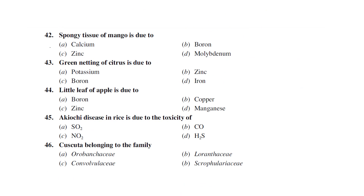Spongy tissue of mango is due to calcium deficiency. Green tinting of citrus is due to iron deficiency. Little leaf of apple is due to zinc deficiency. So the four zinc deficiency diseases are: rice Khaira, citrus foliar sclerosis, white bud of maize, and little leaf of apple.